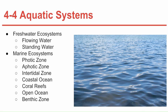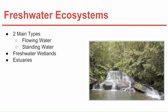Under freshwater ecosystems there are two other types. Freshwater wetlands are ecosystems in which water either covers the soil or is present at or near the surface. The three main types are bogs, which are dominated by moss and acidic water; marshes, which are shallow wetlands usually found near rivers; and swamps, which resemble flooded forests with very slow-moving water.